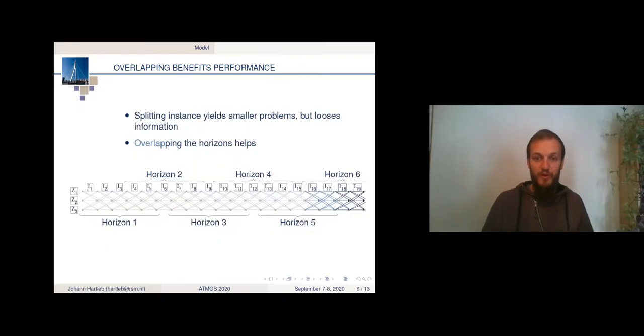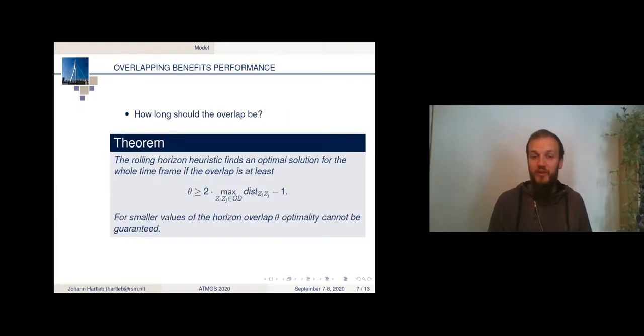So the maximum distance, I'll quickly go back, it's basically the horizontal length of such an arc. That means one arc is a trip from zone I to zone J, and the longer it is in the horizontal, that means the longer time it takes to drive from I to J, the longer this distance. And two times the maximum distance minus one. If we have this as an overlap chosen, the rolling horizon heuristic will provide us with an optimal solution for the whole timeframe.